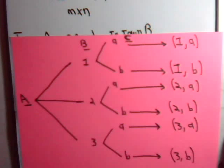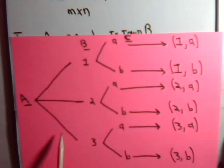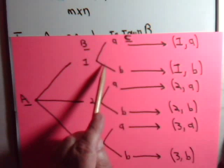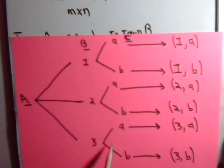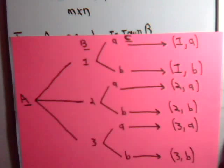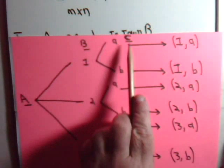So, if we label the roads here, one, two, three, and label each of the roads going out of town B as A and B, like this. Then we can see that the different routes, if you will, going from town A to town C.